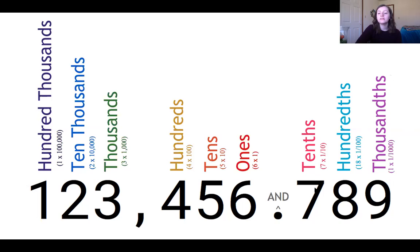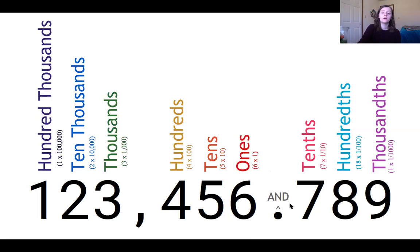If you have a problem asking you to find the number in the thousandths place, you go three places to the right of the decimal — in this number it would be a nine. If it's asking for the tenths place, go one to the right of the decimal. The numbers to the right of the decimal get smaller with each place. This eight in the hundredths place is ten times smaller than the tenths place, and the thousandths is ten times smaller than the hundredths place, and so on.